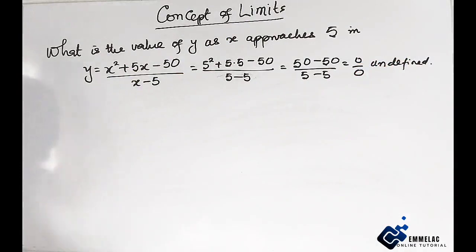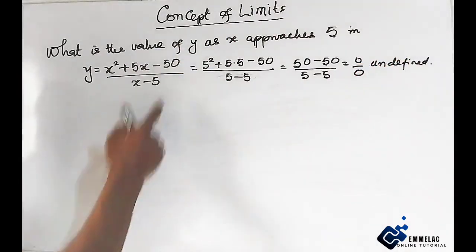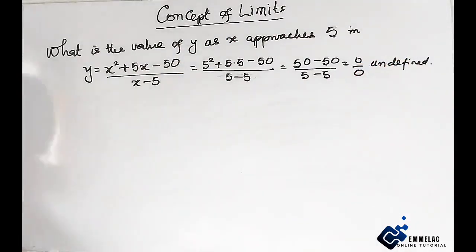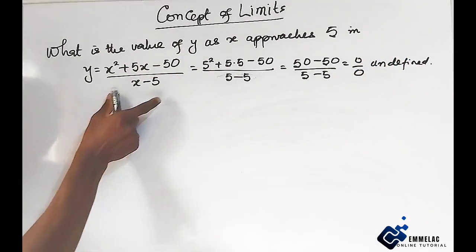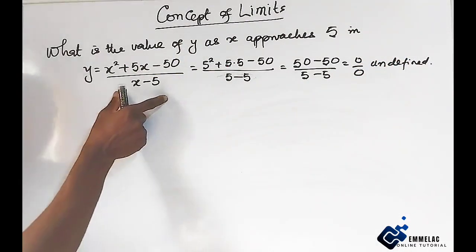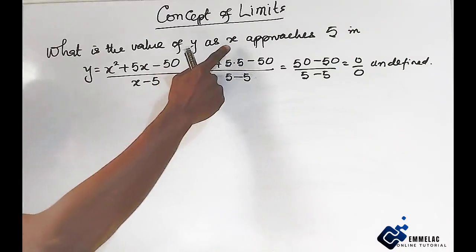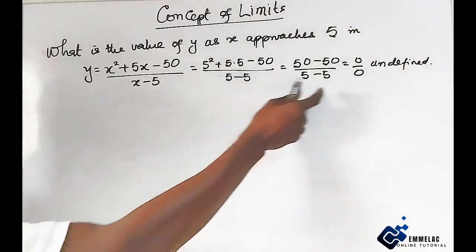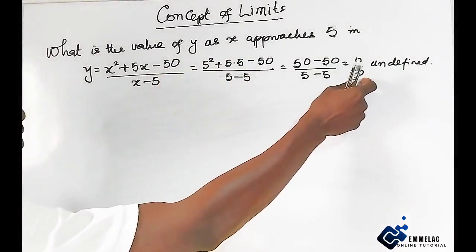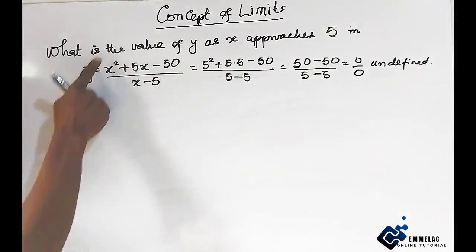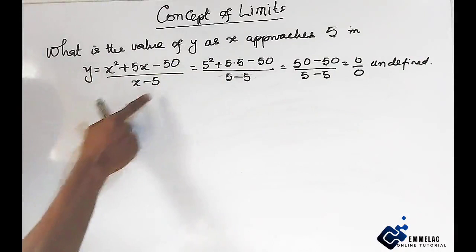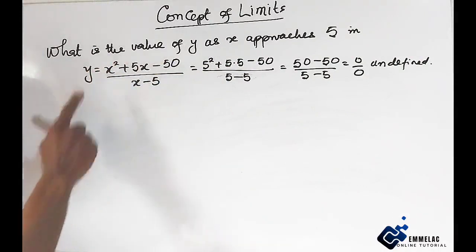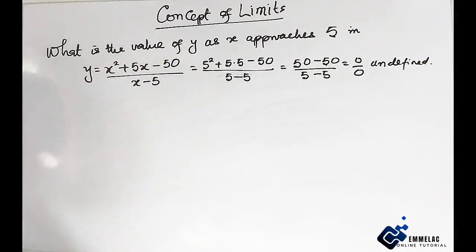As I said in my previous video in the introduction of limits: when you have an expression and you plug in the value of x and you arrive at 0 over 0, it implies that you have not simplified this equation to its simplest or reduced form.